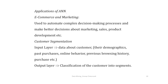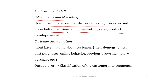There are various applications of artificial neural network, particularly in fields where you encounter very complex modeling problems with big data. If the data follows a very complex pattern and you have big data to train the model, it is advisable to go for artificial neural network. In e-commerce and marketing, ANN is used to automate complex decision-making processes to get better decisions about marketing, sales, and product development.